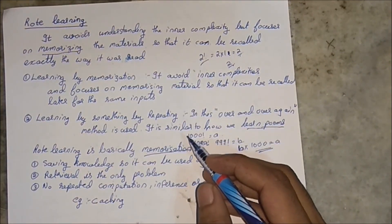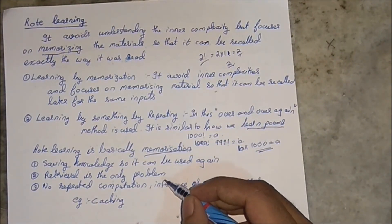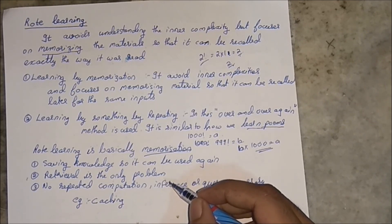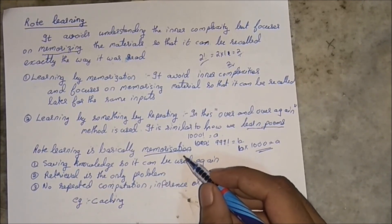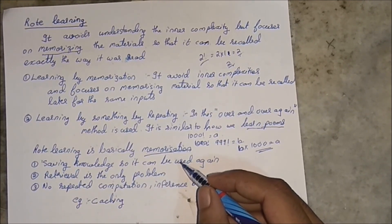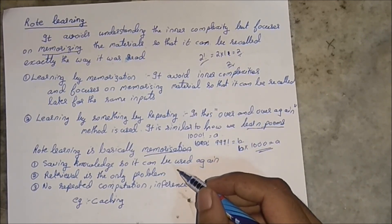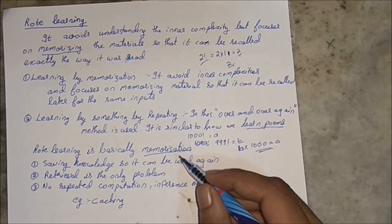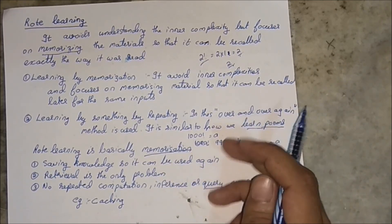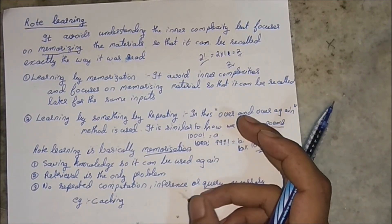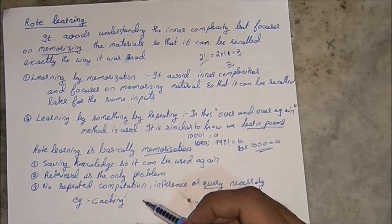An example of rote learning is caching. When you visit lots of websites, it reduces the time to reload them. For example, when you go to gmail.com, a cookie is stored in your web browser so that next time you type gmail.com it loads faster. So cookies and caching are examples of rote learning.